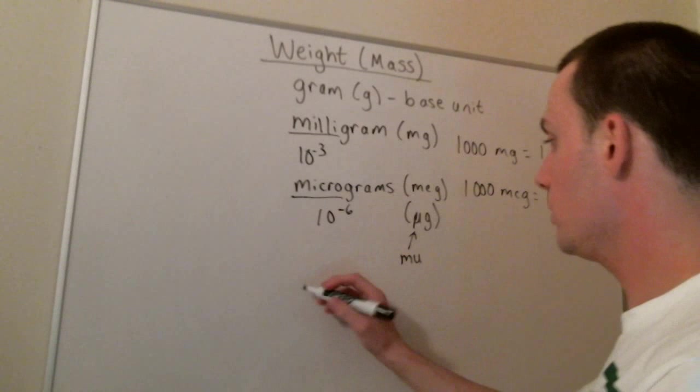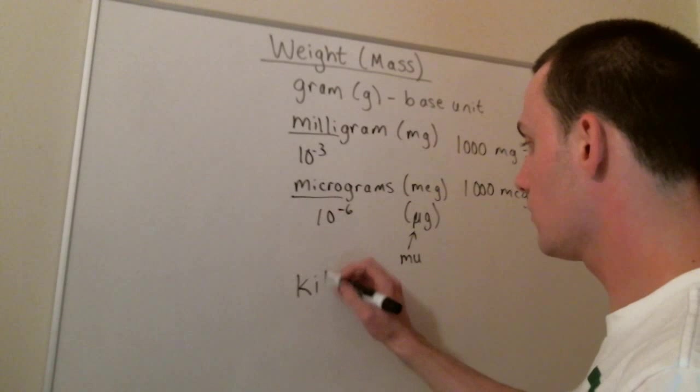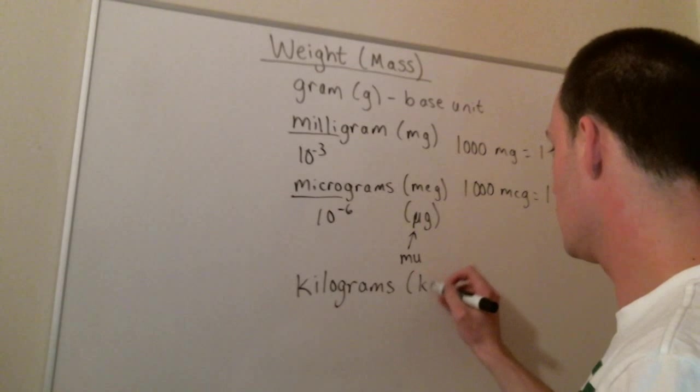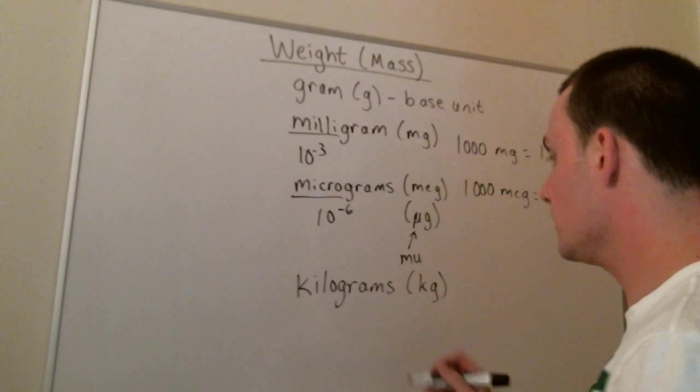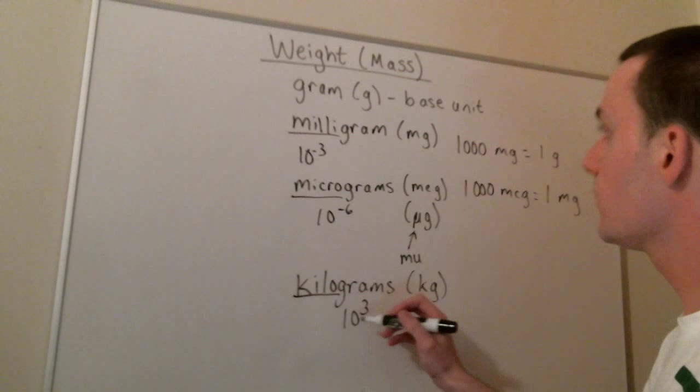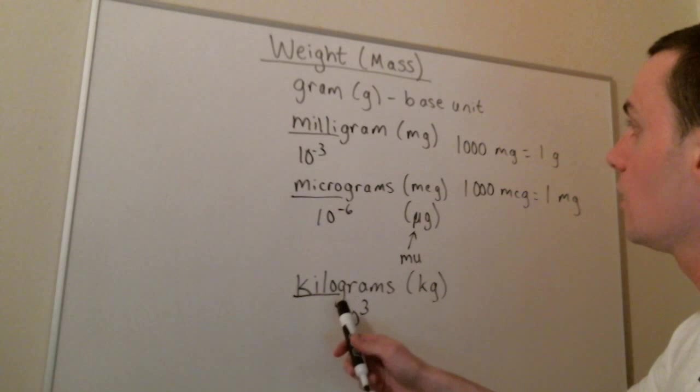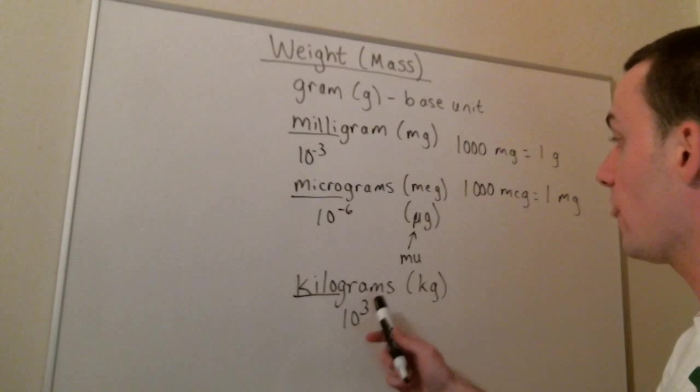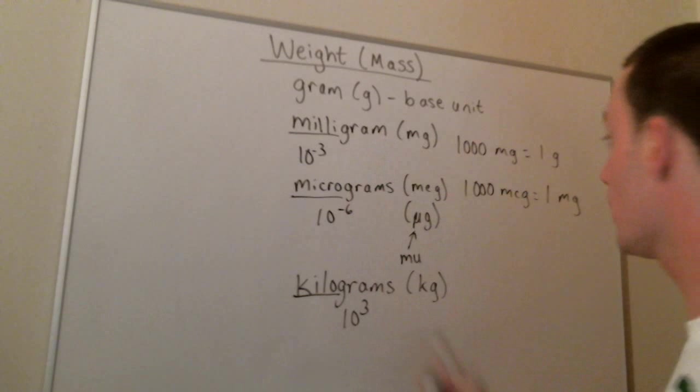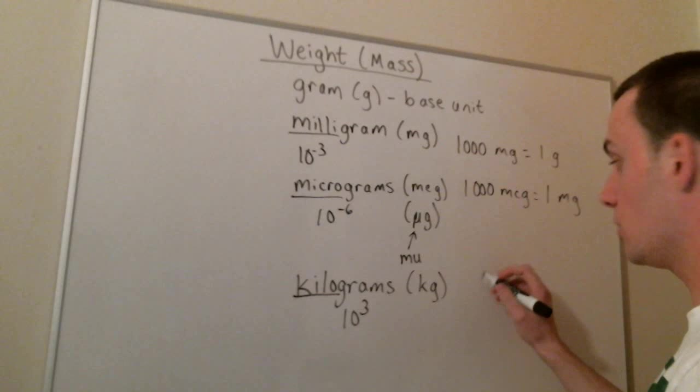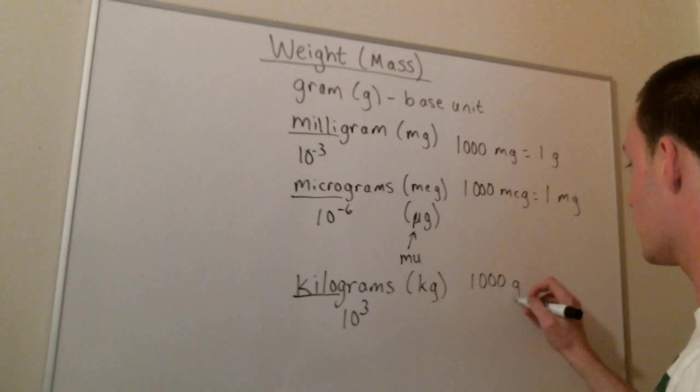We also use kilograms when talking about a person's weight. Kilo means 10 to the third. So a kilogram is 1,000 times as large as a gram. And so there's 1,000 grams in one kilogram.